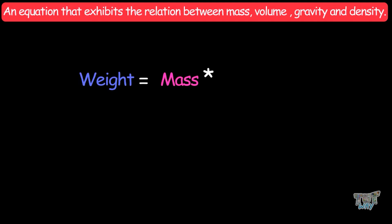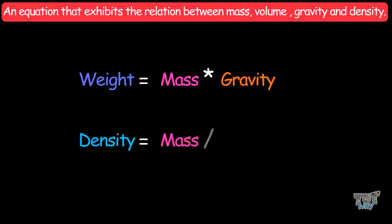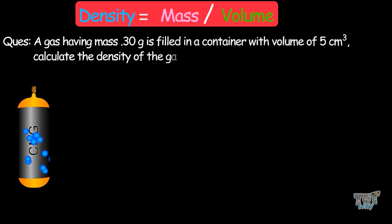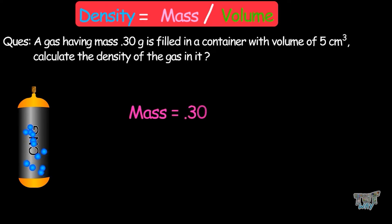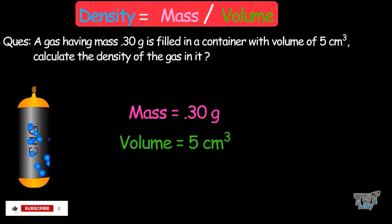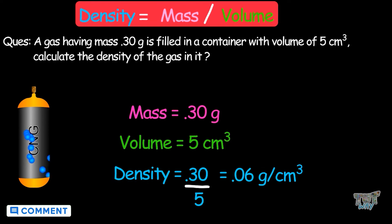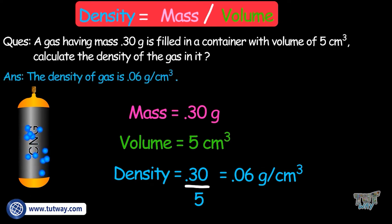Now let's learn equations that exhibit the relationship between mass, volume, gravity, and density. Weight is the product of mass and gravity. Density is mass divided by volume. Now let's calculate density for some materials. A gas having the mass of 0.3 grams is filled in a container with the volume of 5 cubic centimeters. Density is mass divided by volume, so density is 0.3 divided by 5, which equals 0.06 grams per cubic centimeter.